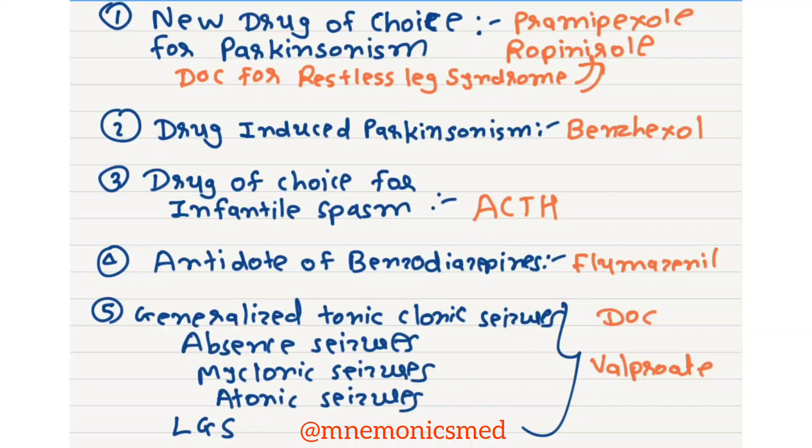For generalized tonic-clonic seizure, absence seizure, myoclonic seizure, and atonic seizure, drug of choice is Valproate.